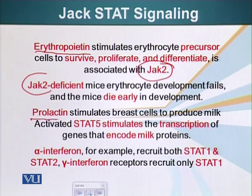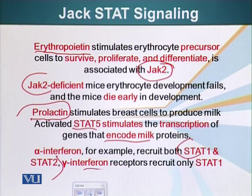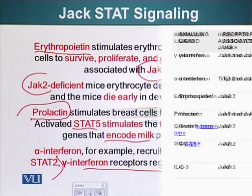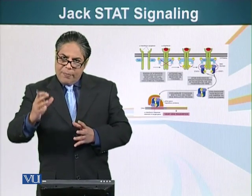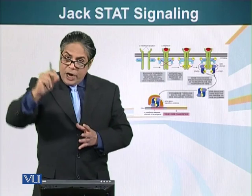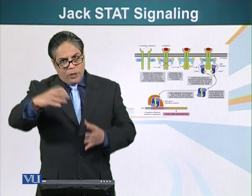Prolactin is another signaling molecule that stimulates the JAK-STAT system. It results in production of milk and activates STAT5 molecules. STAT5 molecules stimulate the transcription of genes that encode milk proteins. Alpha interferon activates both STAT1 and STAT2, whereas gamma interferon just activates STAT1. Here is an example of how different signaling molecules activate different JAKs and different STATs, presented on screen. This system can detect a signal and convey the message directly to the nucleus to produce special proteins. We will look at other systems that are also directly wired to the nucleus.